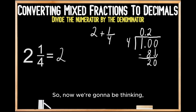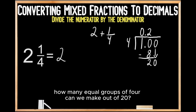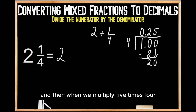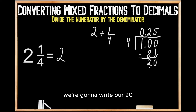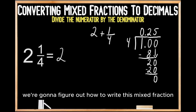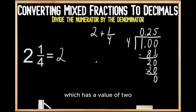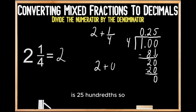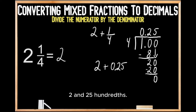Now we're going to be thinking: how many equal groups of 4 can we make out of 20? We know we can make 5 equal groups of 4 out of 20, so we write our 5 up top, and when we multiply 5 times 4 we get 20. We write our 20 and subtract 20 from 20, which leaves us with 0. Since we don't have any remainder, we're done. So we have our whole number with a value of 2, and then we add on the value of our decimal, which in this case is 25 hundredths. So 2 plus 25 hundredths gives us our answer of 2 and 25 hundredths.